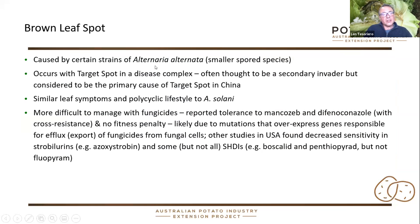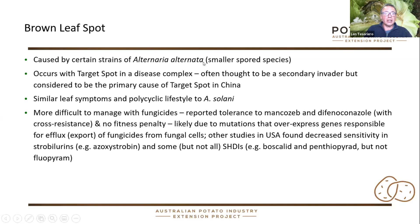Brown leaf spot is really part of this disease complex. Alternaria alternata, being one of the smallest-spored species of Alternaria, has always been around, but in more recent years it seems to be becoming more prominent and we don't really know why. Alternaria alternata as a fungal species is itself a pathogen complex. We don't really know whether there are new strains introduced into Australia, or whether some strains of Alternaria alternata have just adapted a little bit more. There are some pertinent points about it that we need to consider.